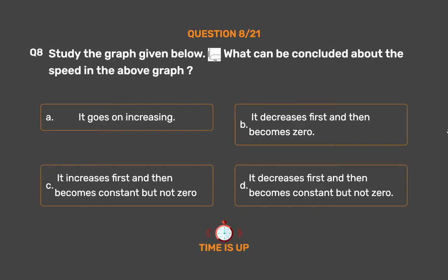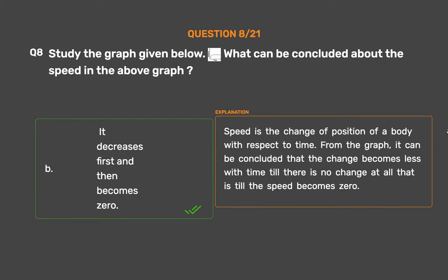The correct answer is Option B: It decreases first and then becomes zero. Speed is the change of position of a body with respect to time. From the graph, it can be concluded that the change becomes less with time till there is no change at all, that is, till the speed becomes zero.